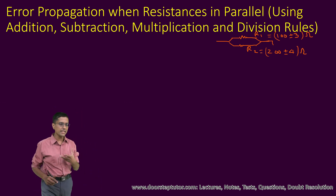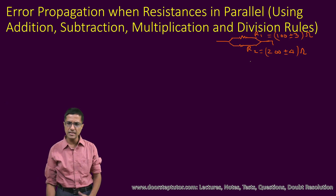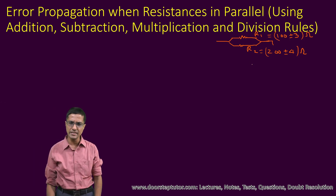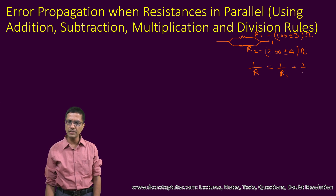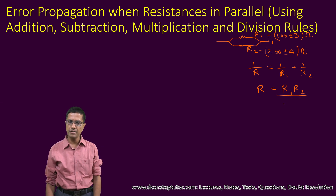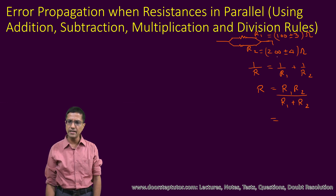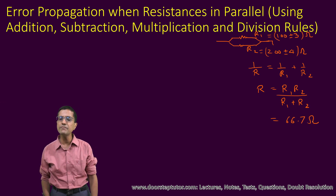Since these two resistances are in parallel, let us compute the value of the equivalent resistance R. This can be done using 1/R = 1/R1 + 1/R2, which simplifies to R = R1·R2 / (R1 + R2). Substituting R1 = 100 and R2 = 200, this comes out to be 66.7 ohm. That is the value of R.